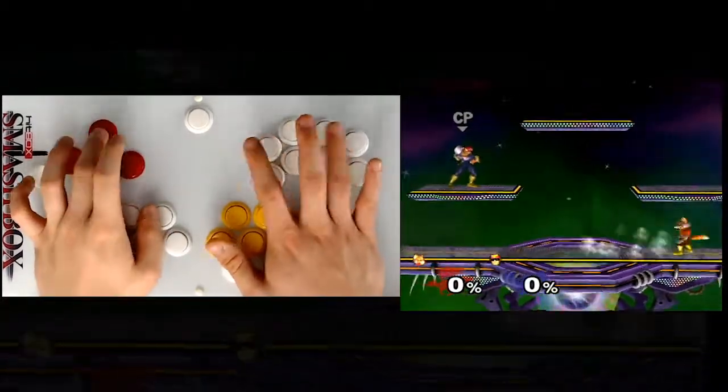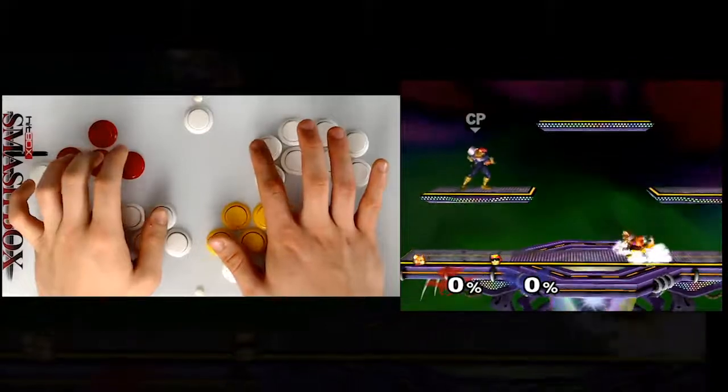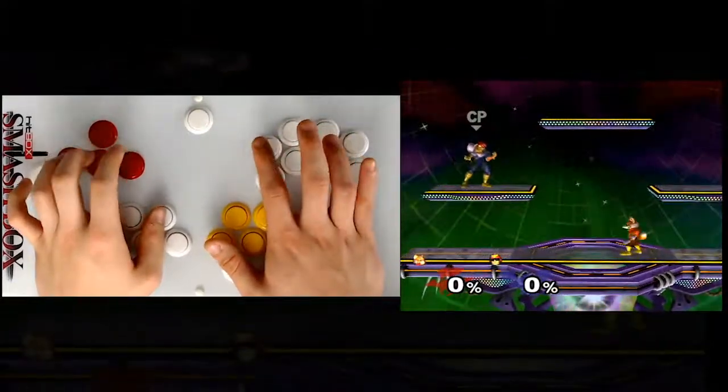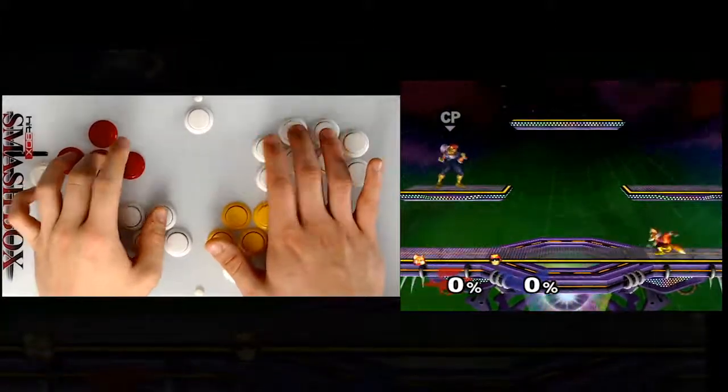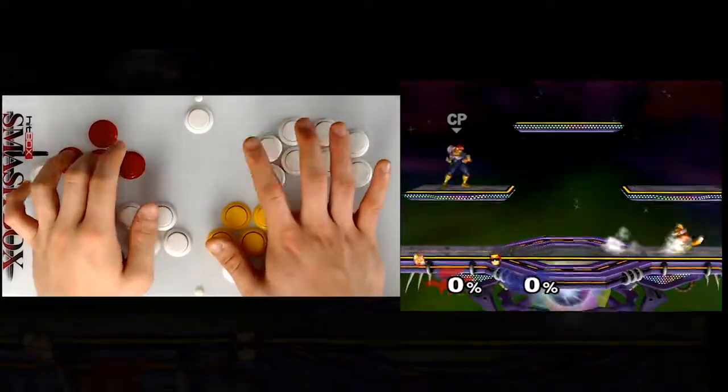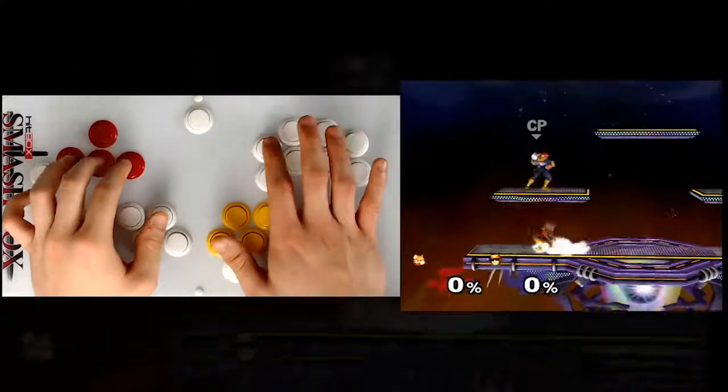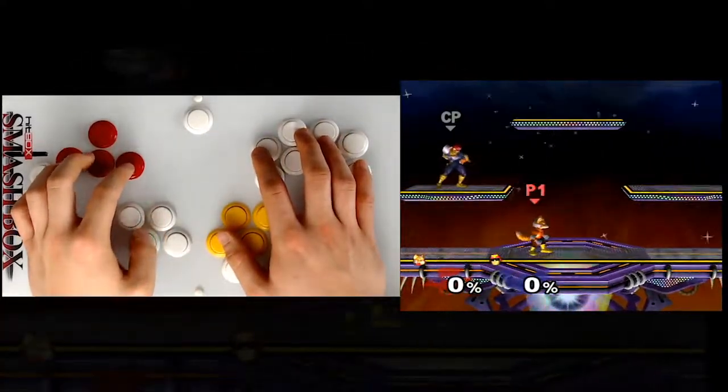Let's say I'm a Samus player, I might even be more inclined to go for A because Z is not as good for her, obviously. Her grab's terrible, so maybe she would just do L and A, and that way she would be as good as possible at just wave dashing around, putting out her tilts, putting out her jabs.